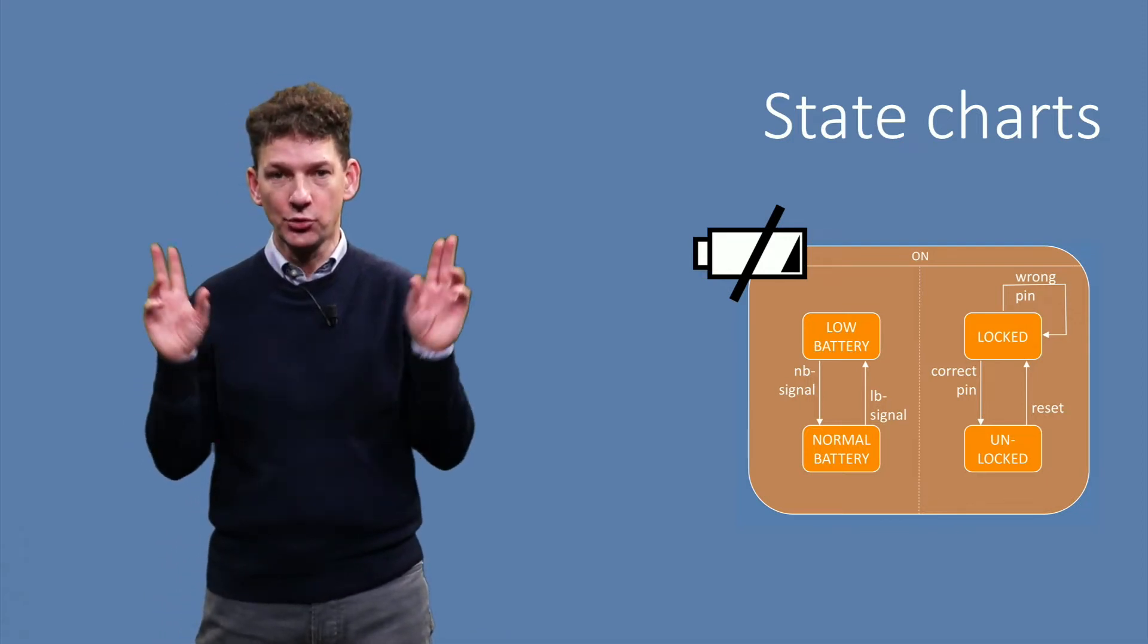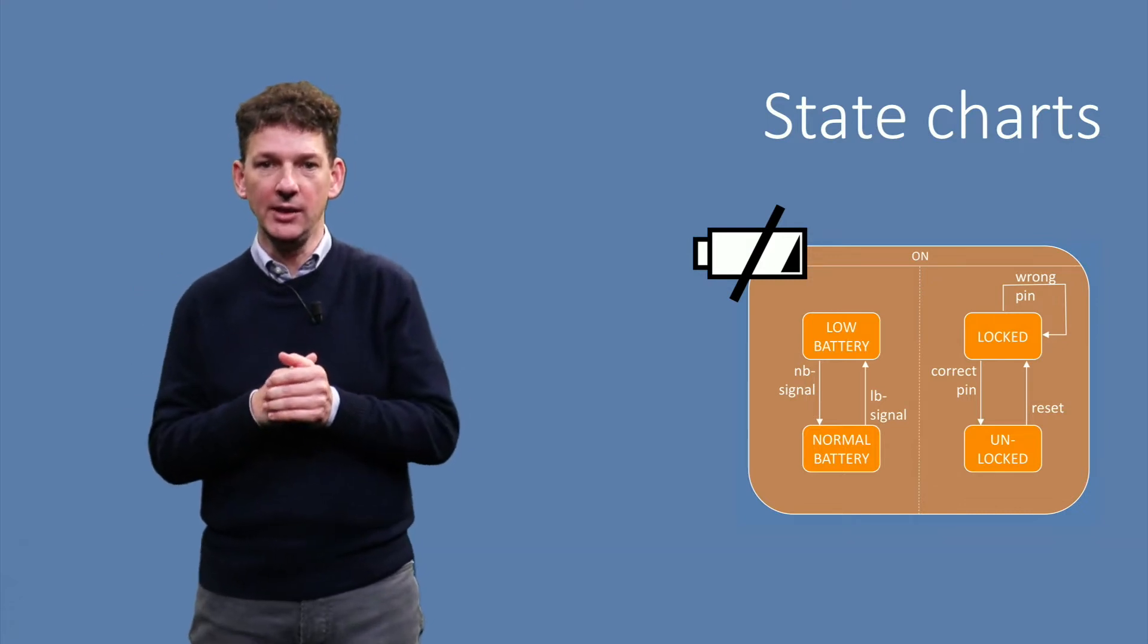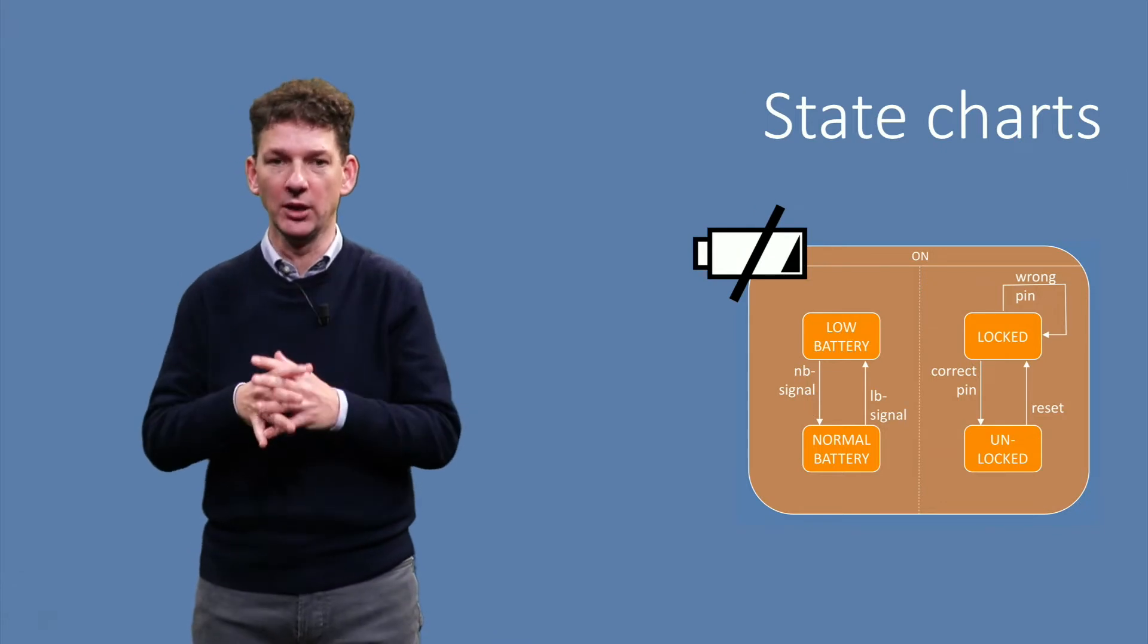Of these we will look at so-called super-states and orthogonal regions. These can also be viewed as ways to combine multiple smaller diagrams into bigger ones.